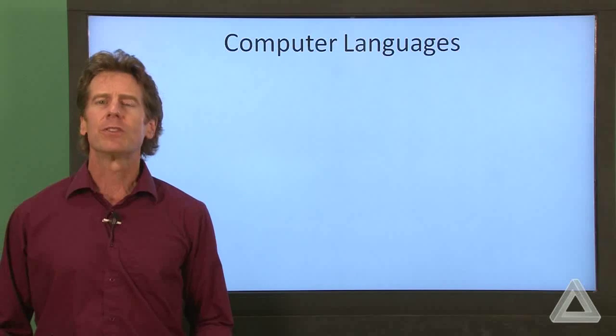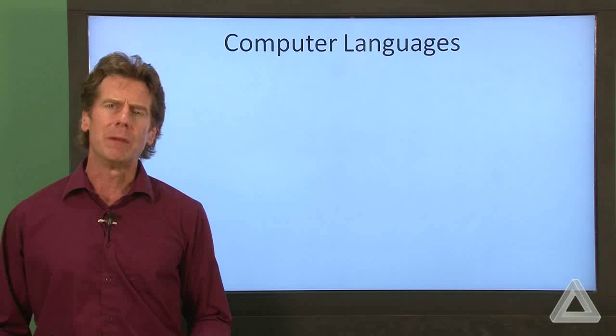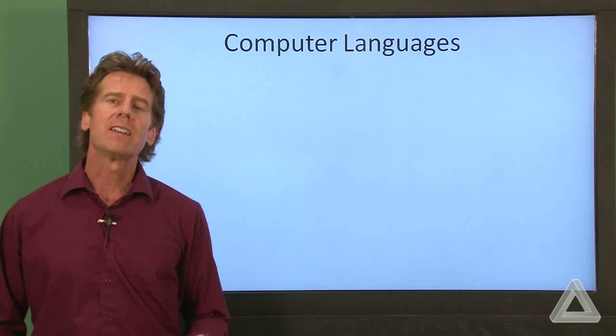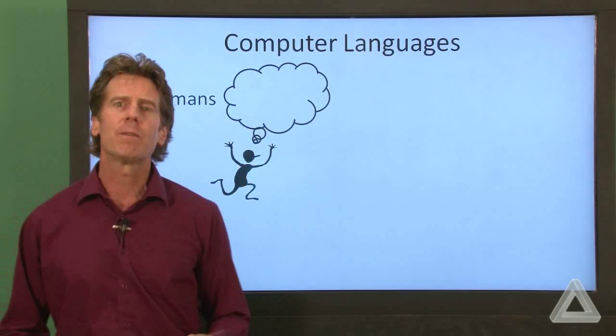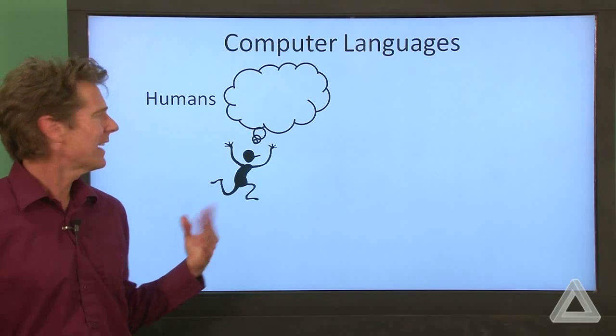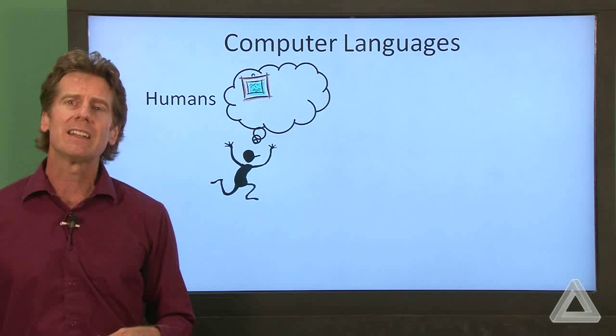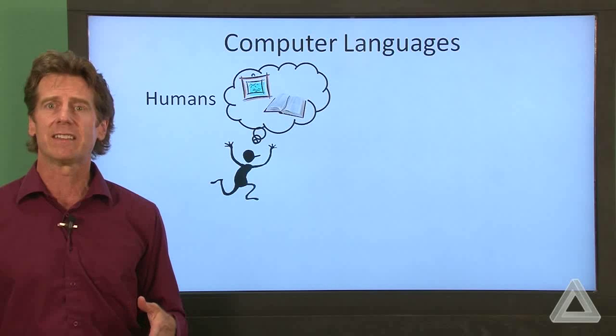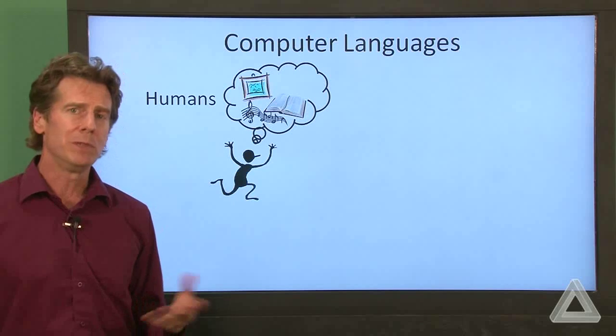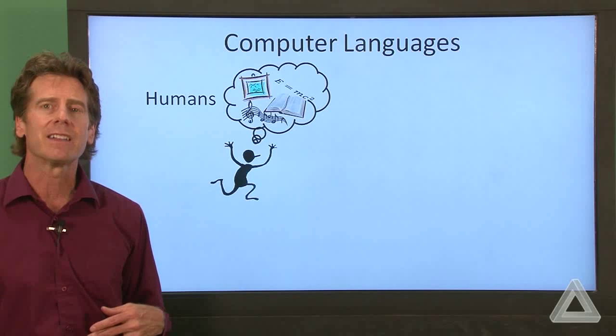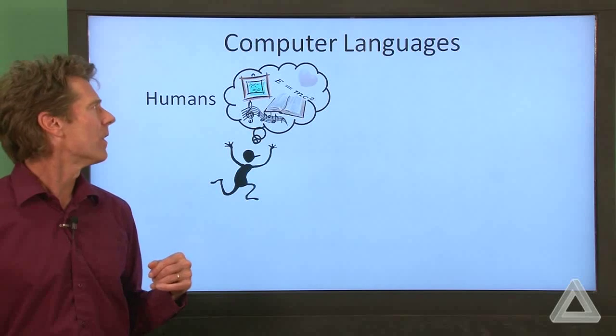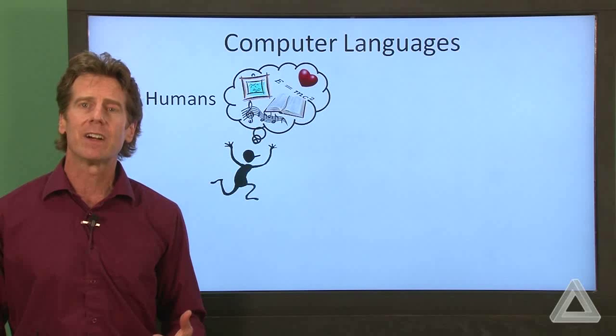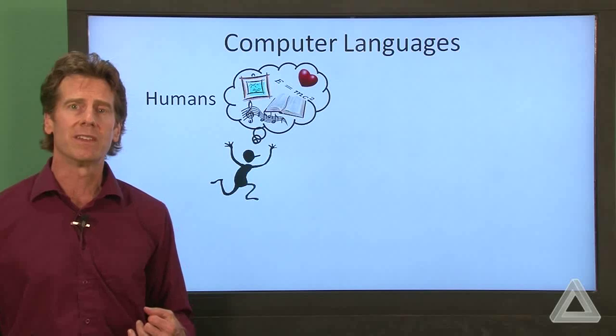Okay, so we've talked about computers and how they represent information. We've talked about computers and how they compute, but now how do humans talk to computers? And first of all, we as humans, how do we think? Well, we think in terms of pictures. We think in terms of language, text, words. We think musically at times, or we can think mathematically. And wrapped up in all of this are our emotions. And in fact, we don't even really understand very well at this point how humans think.